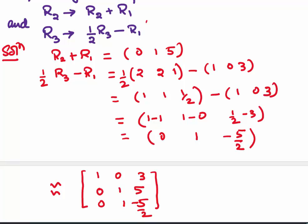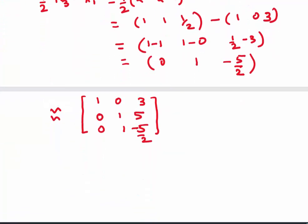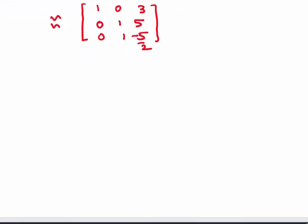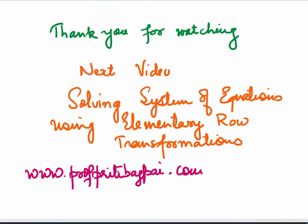You just saw that we can do more than one elementary row transformation on a matrix at any stage. Why are we learning elementary row transformations? Because they help us in solving systems of equations and in finding the inverse. Using them, we reduce big numbers inside our matrix to smaller values — sometimes to 0 — and that helps us get the solution or find the inverse. Our next topic will be solving systems of equations using elementary row transformations. For detailed notes and practice problems, visit www.profpritivajpay.com.